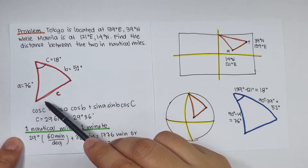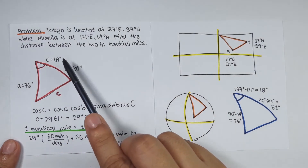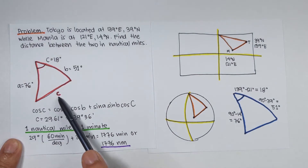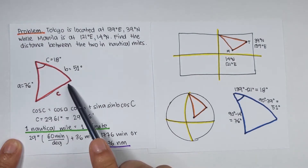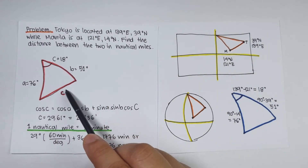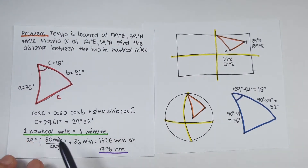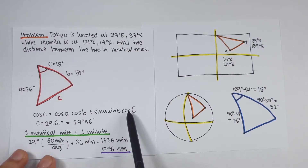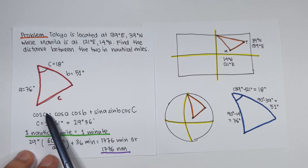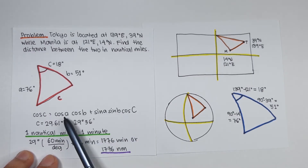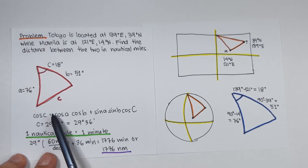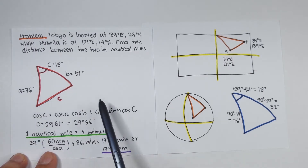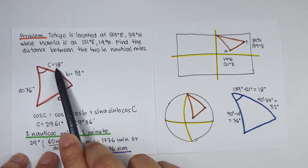With side A = 76 degrees, side B = 51 degrees, and angle C = 18 degrees, we need to find side C — the distance between Tokyo and Manila. Using the cosine law for sides: cos C = cos A · cos B + sin A · sin B · cos C. So cos C = cos 76 · cos 51 + sin 76 · sin 51 · cos 18 degrees.